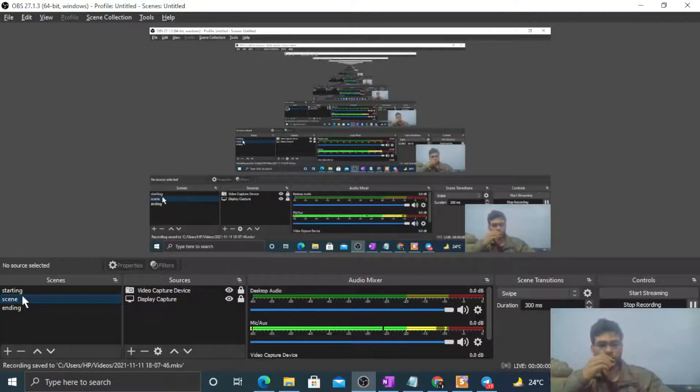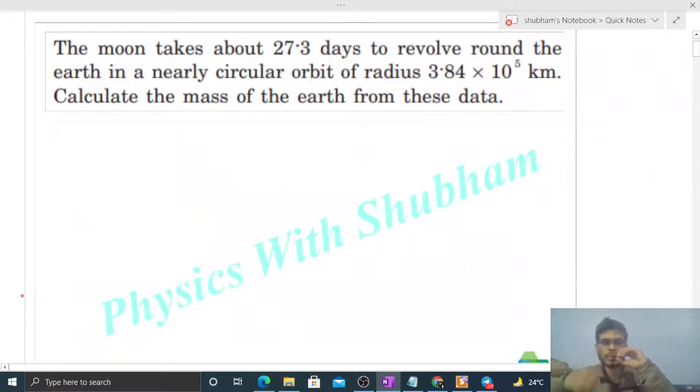Okay hi everyone, today let's discuss one interesting problem. It says the moon takes about 27.3 days to revolve around the earth in a nearly circular orbit of radius 3.84 × 10⁵ km. Calculate the mass of the earth from these data.